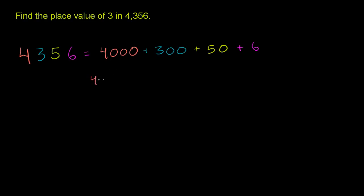this is 4 thousands plus—or you can even think of it as—plus 3 hundreds plus 50, which you could think of as 5 tens plus 6. And instead of 6, we could say plus 6 ones.